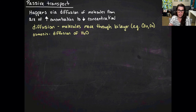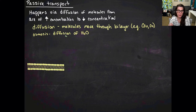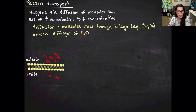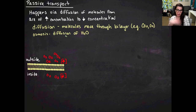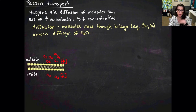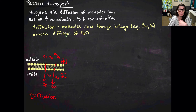Let's look at simple diffusion with a diagram. Here I have my phospholipid bilayer, with outside and inside labeled. I have a high level of oxygen concentration outside the cell and a low level inside. Based on the principle of diffusion and the concentration gradient, the oxygen will diffuse into the cell until there is equilibrium between the two sides. That's simple diffusion.